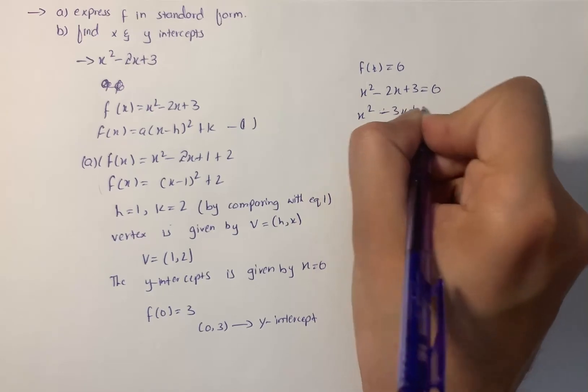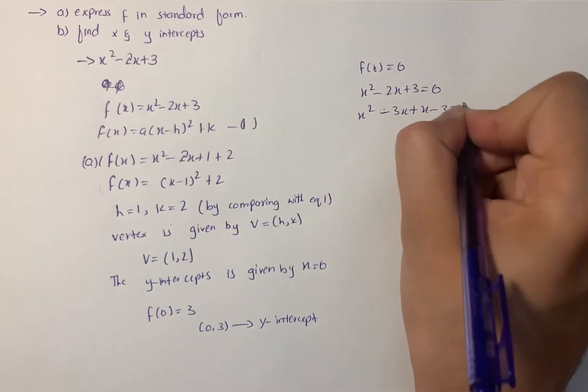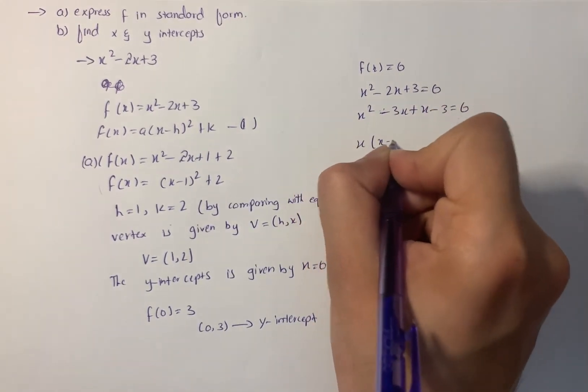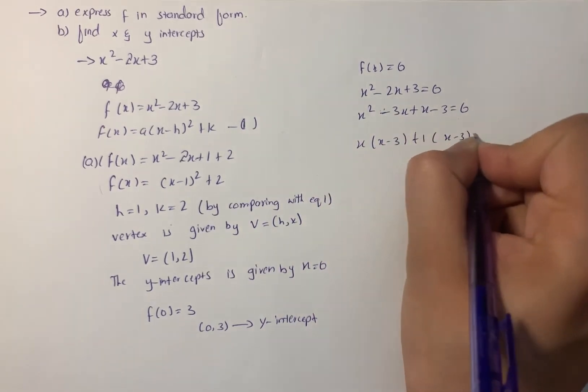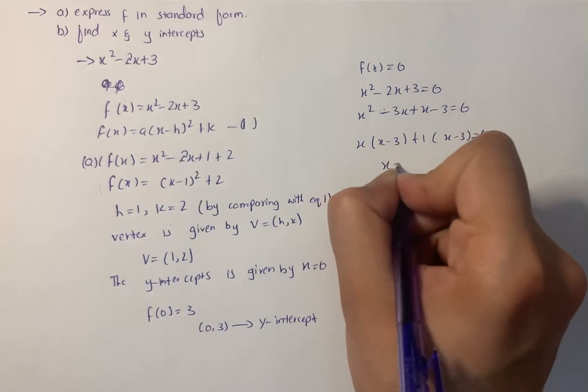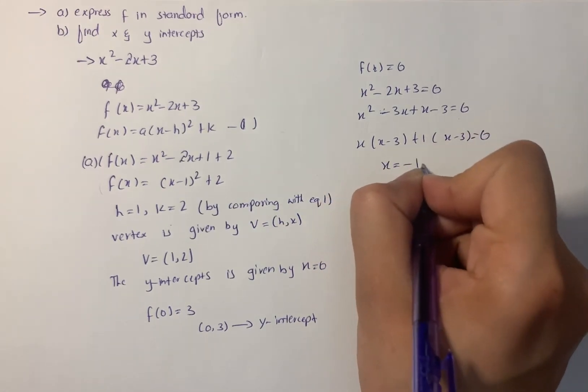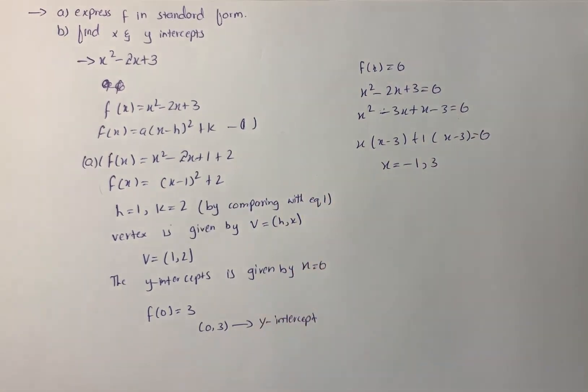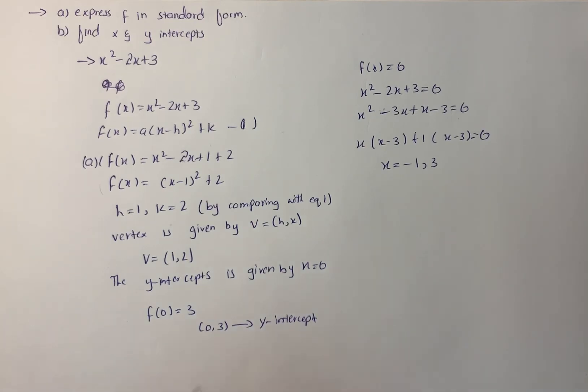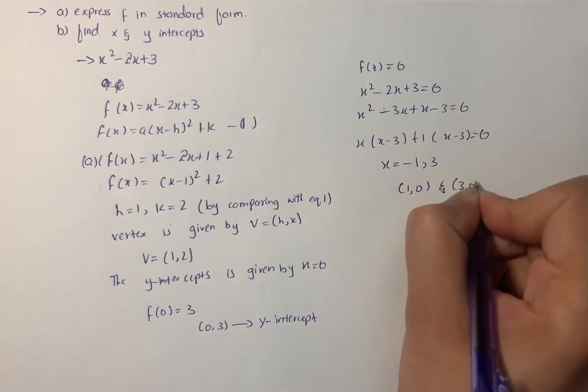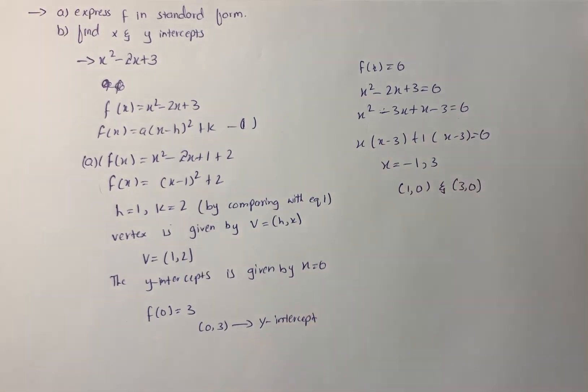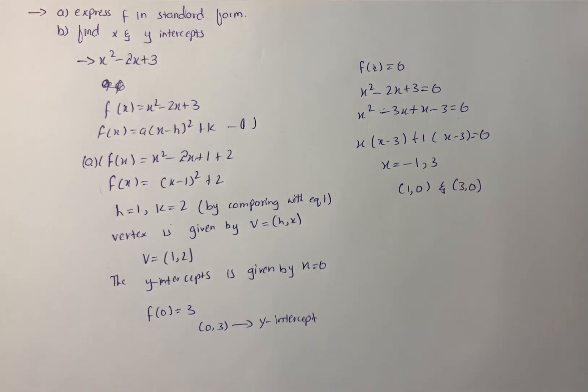After factoring, x = -1 and x = 3. So the x-intercepts of function f are (1, 0) and (3, 0). Those are the x-intercepts of the given equation.